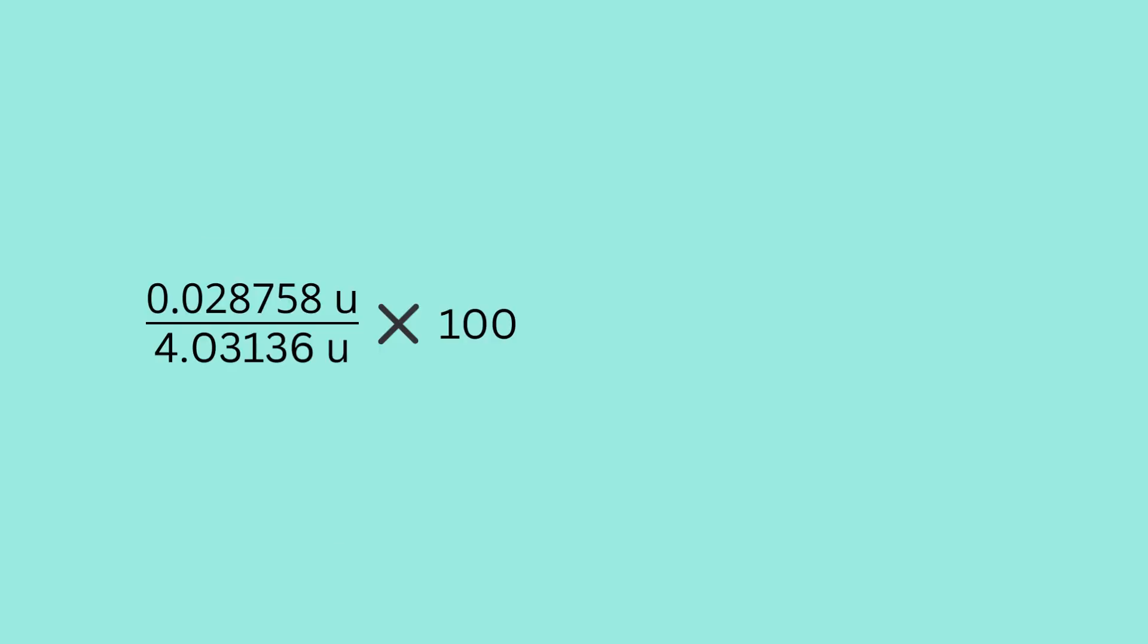If you divide this number by the mass of 4 hydrogen and multiply it with 100, you get that this is merely 0.7% of the initial mass. So we can say that only 0.7% of this is converted to energy. We will get back to this in a while.